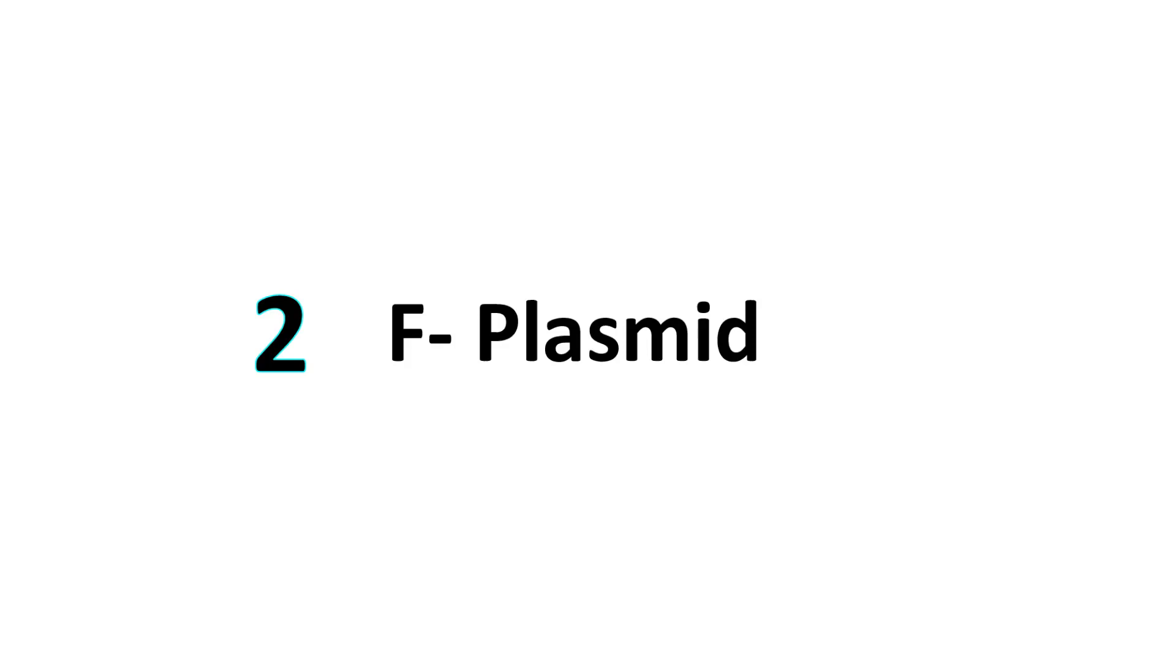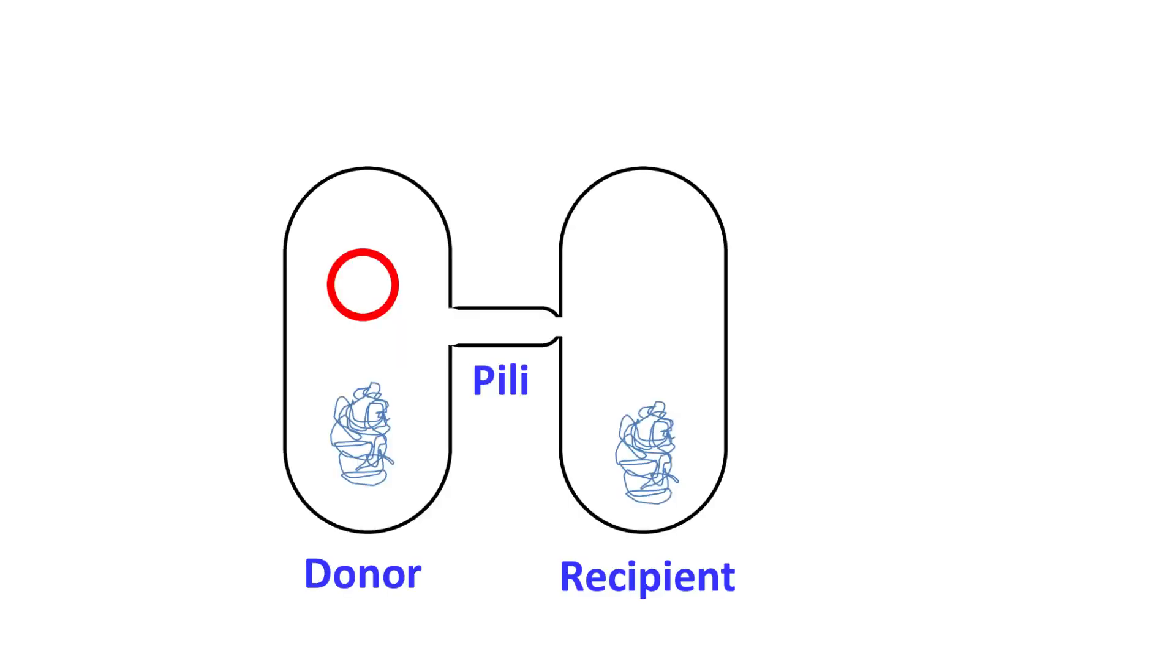The plasmid present in the donor cell is called the F-plasmid and the donor cell is called F-plus-cell. Before conjugation, the recipient cell lacks the F-plasmid and hence the recipient is denoted as F-minus.